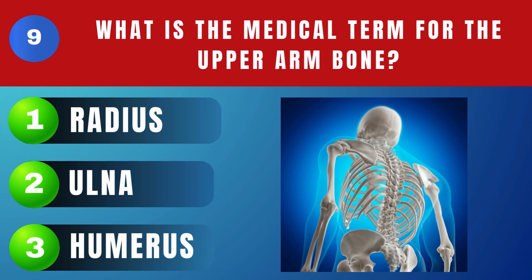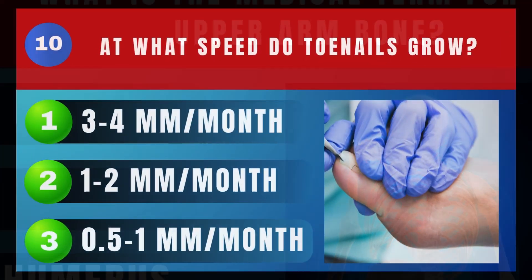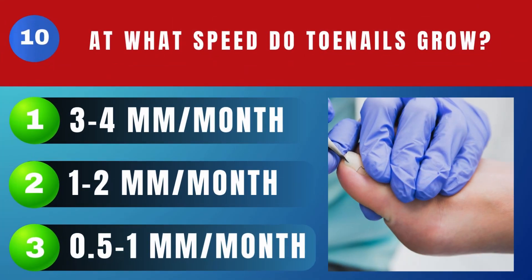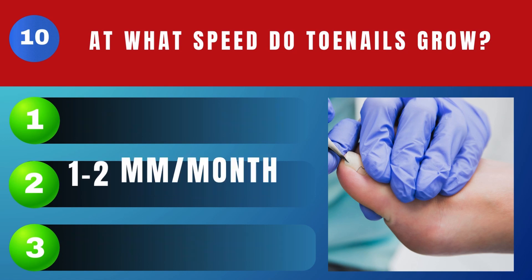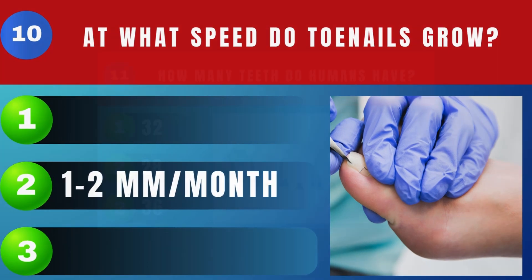What is the medical term for the upper arm bone? Humerus. At what speed do toenails grow? One to two millimeters per month.